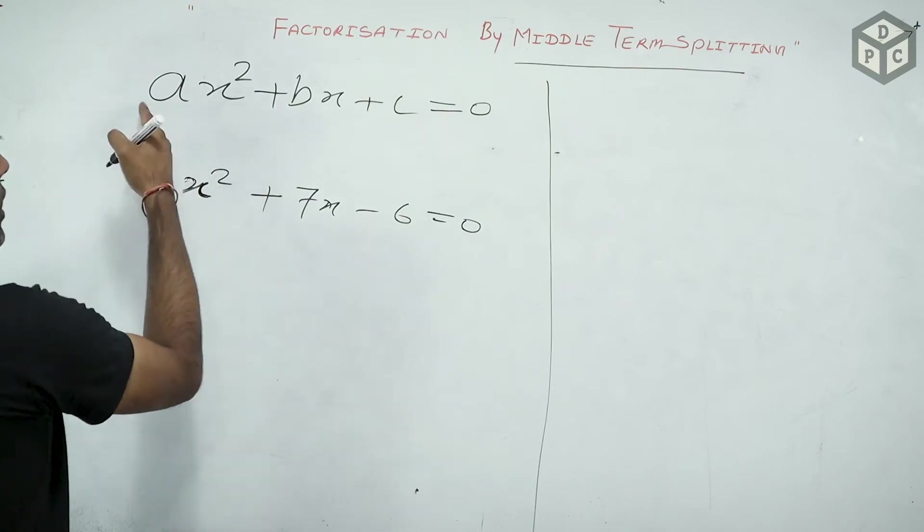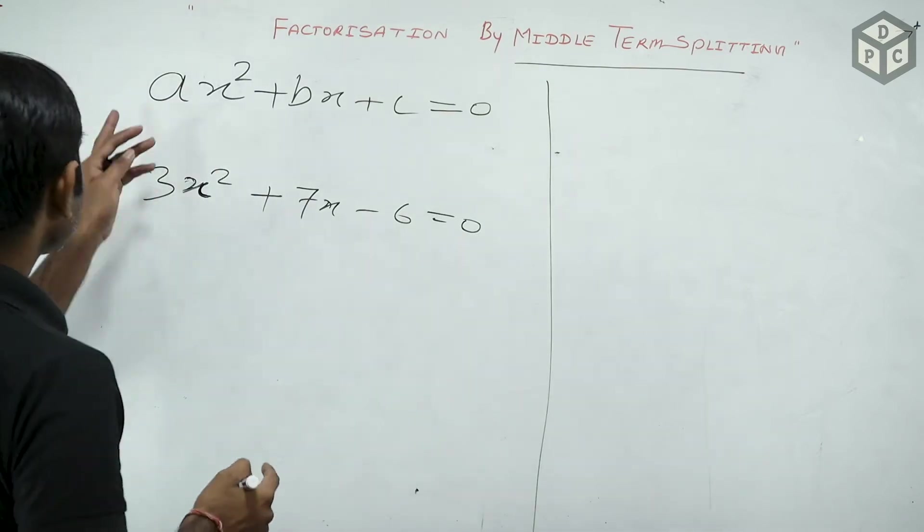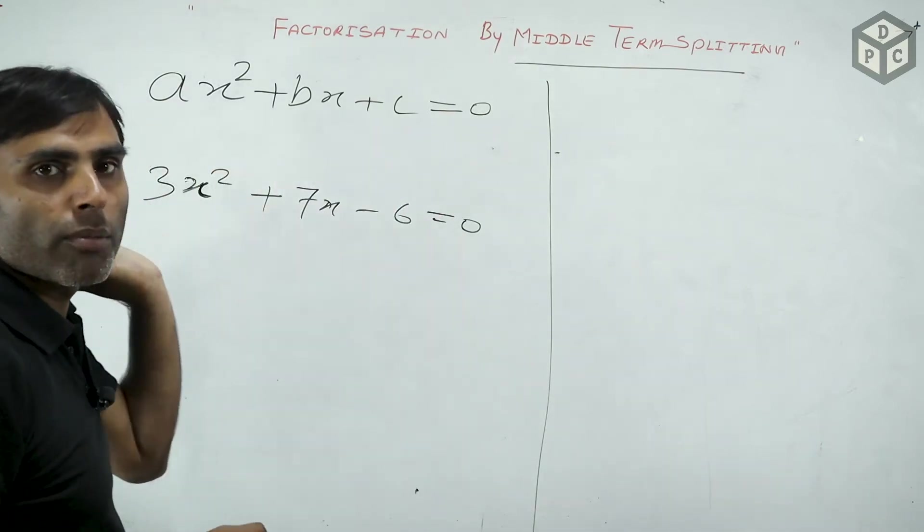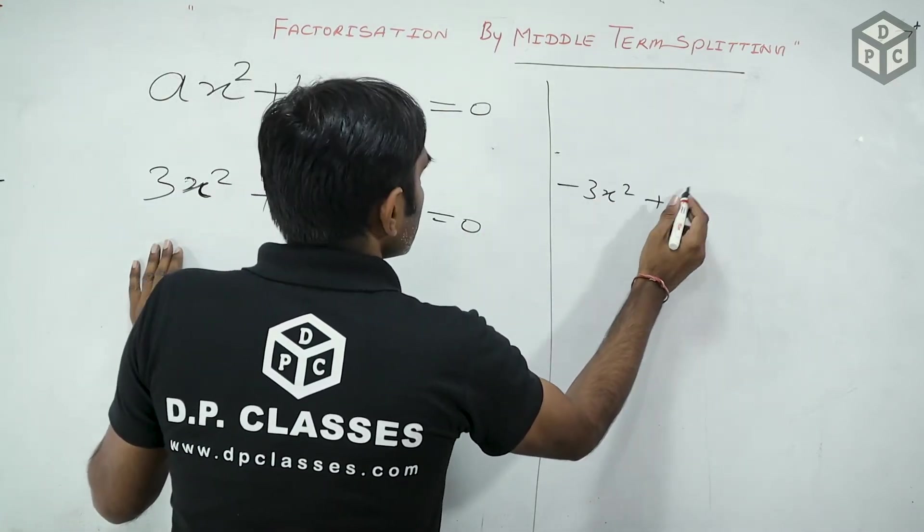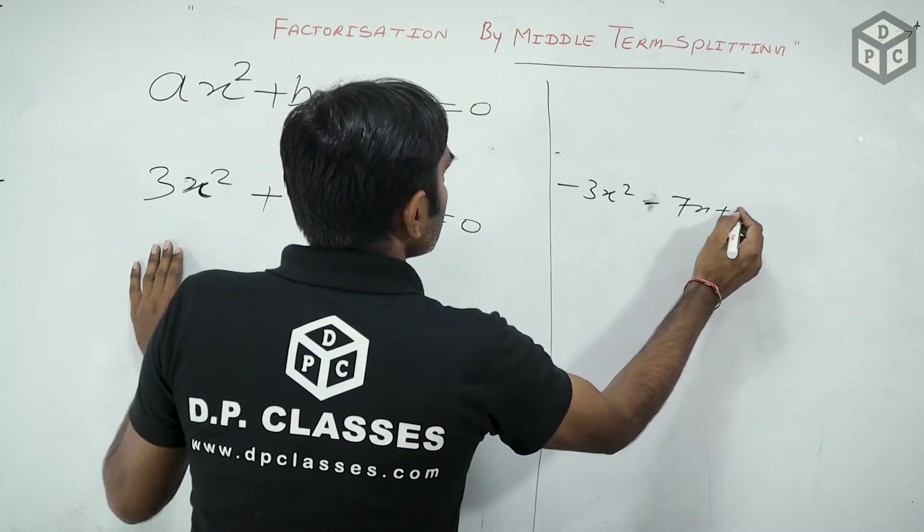When we apply the factorization method, we will always take care of one thing, we will take care of x square. The coefficient should always be positive. If it is negative, then we will all be positive. Suppose this is positive. Suppose this is like this. 3x square plus or plus minus 7 plus 6 equal to 0.